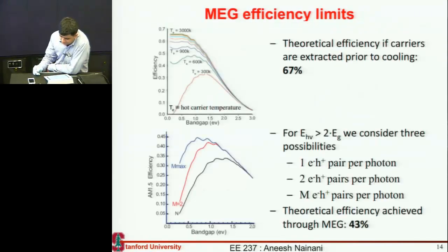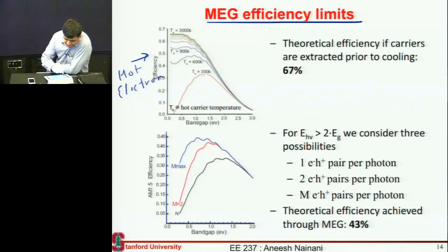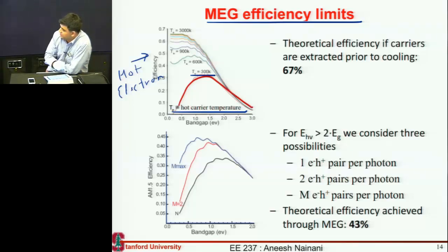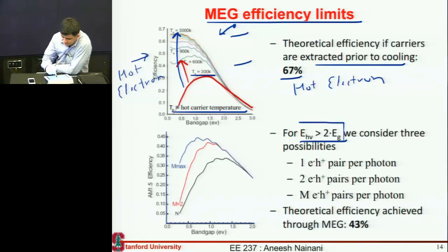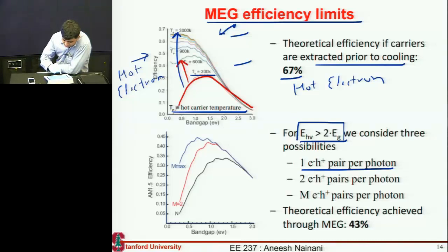People have modeled this in the context of hot carrier cells. If you extract electrons only at 300 Kelvin you get this U-shaped umbrella efficiency curve, but if you can extract these electrons at a hotter temperature - before they relax - you could in principle achieve efficiency of 67 percent. Now if instead of hot electrons we only consider photons with energy greater than twice the band gap, we can use them to generate one electron-hole pair, which gives a certain efficiency curve.